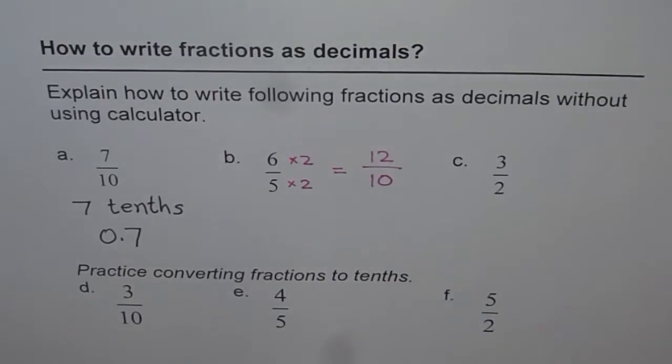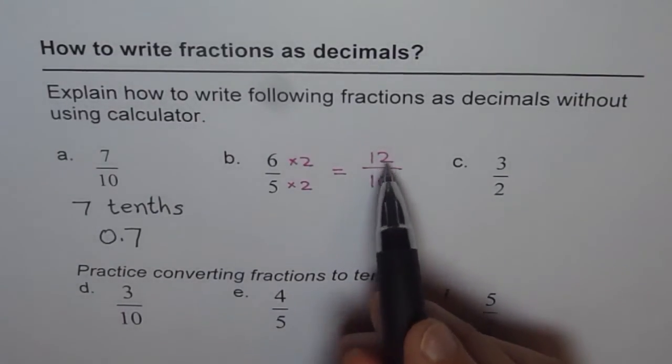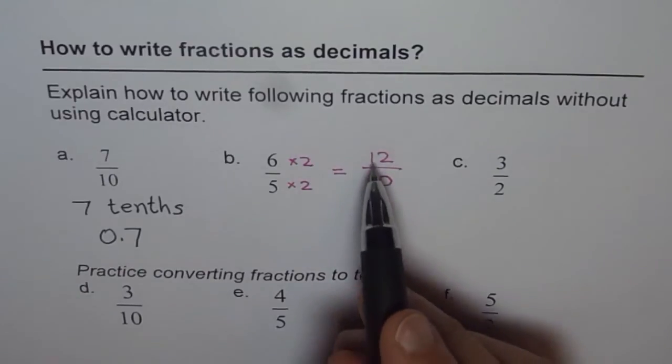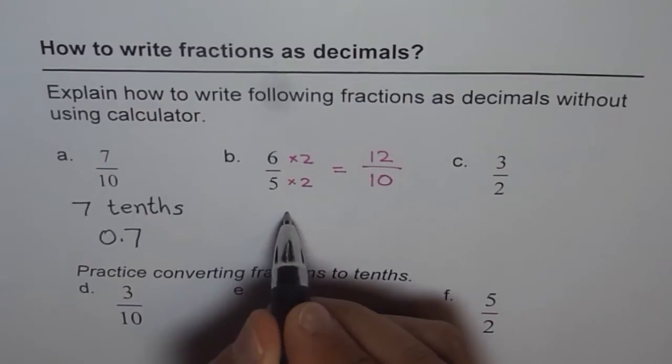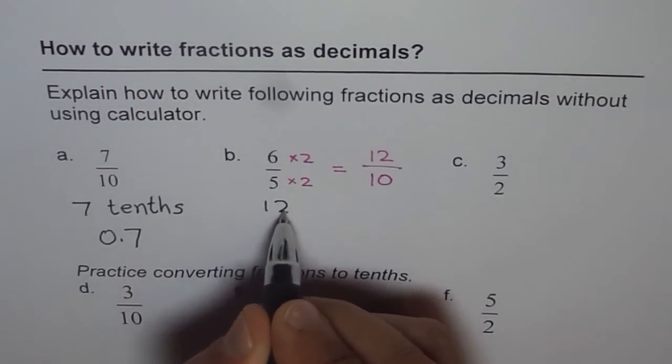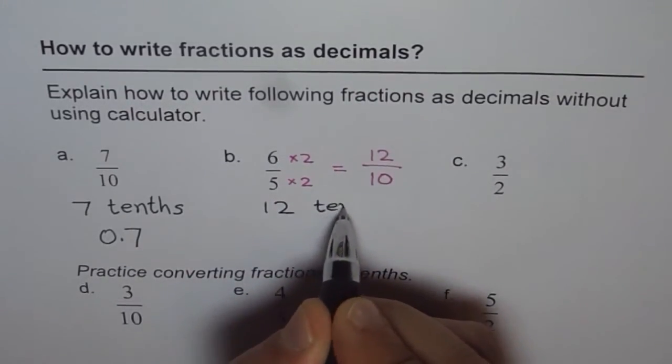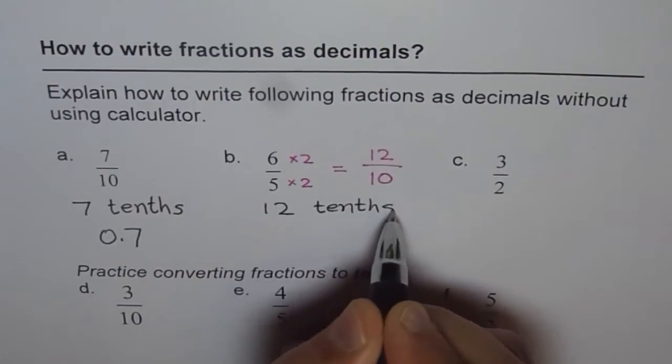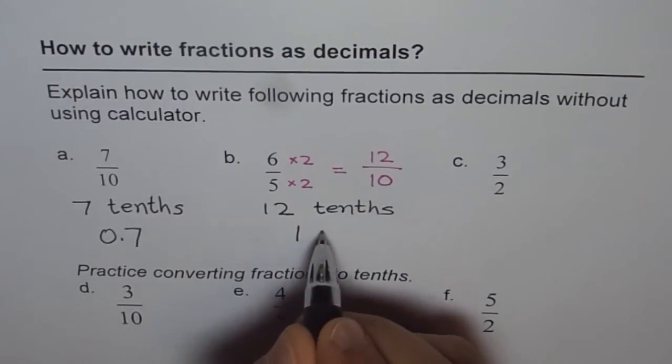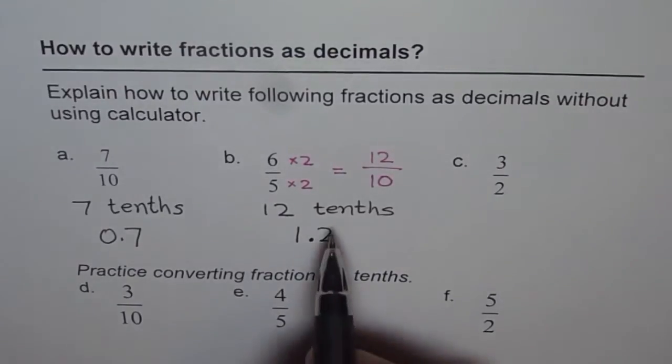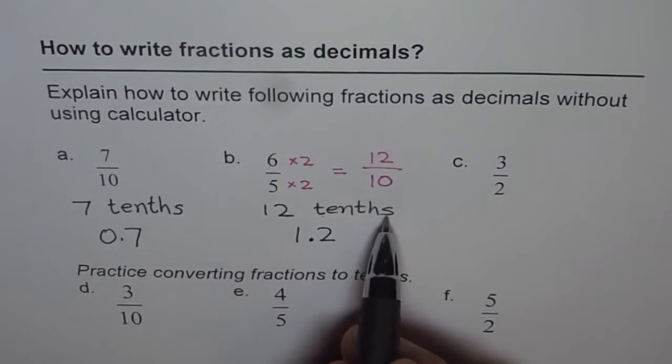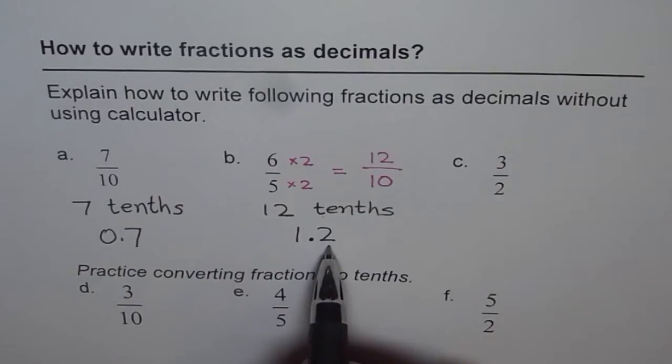So now we can write this as decimal numbers. 12 divided by 10 is 12 tenths. 12 tenths means what? Let me write this as 12 tenths. So 12 tenths means, you'll write 12, but the decimal will come here, do you see? Because when we end with tenths, we can only have one number after decimal.